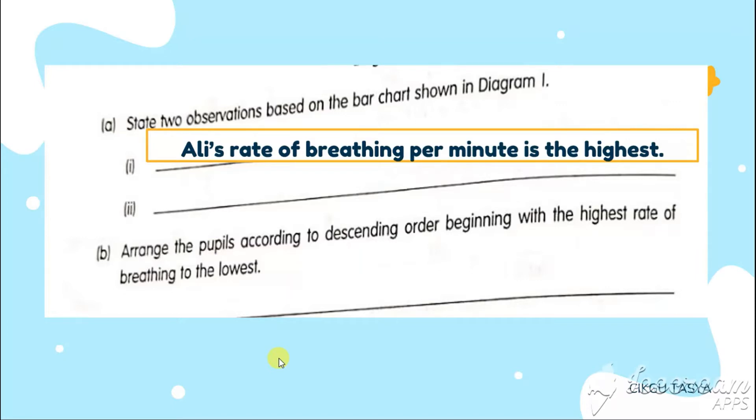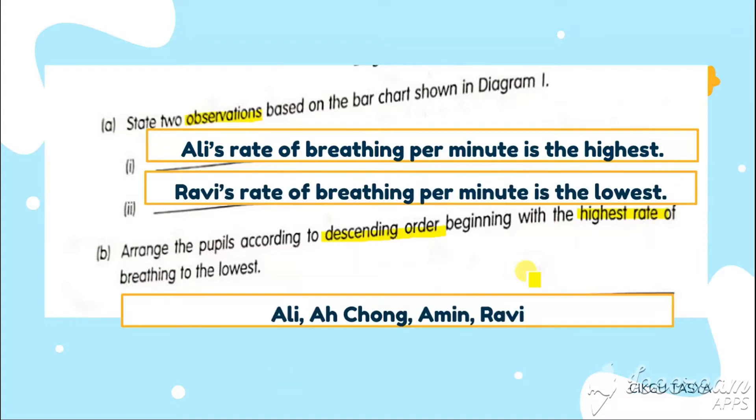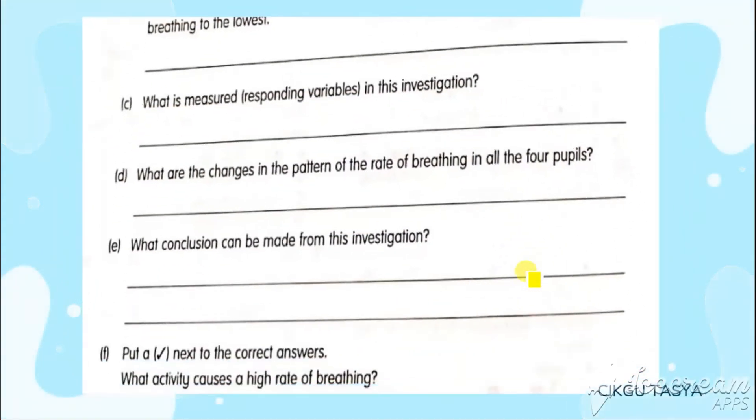Next one. Arrange the pupil according to descending order, beginning with the highest rate of breathing to the lowest. It will be highest means Ali, Achong, Amin, and Ravi.